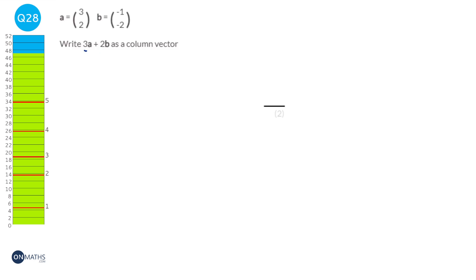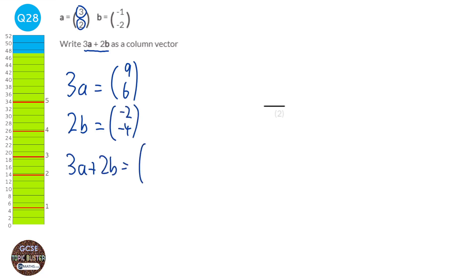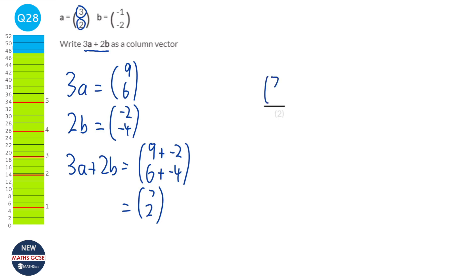We're asked to find the vector 3a plus 2b. To find 3a we multiply the top and bottom of a by 3, giving (9, 6). To find 2b we multiply by 2, giving (−2, −4). To find 3a plus 2b we add the components: 9 plus minus 2 is 7, and 6 plus minus 4 is 2. So the vector is (7, 2).